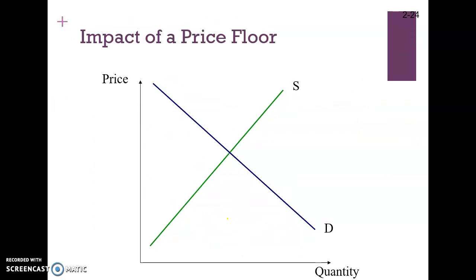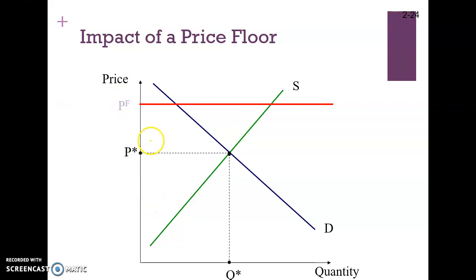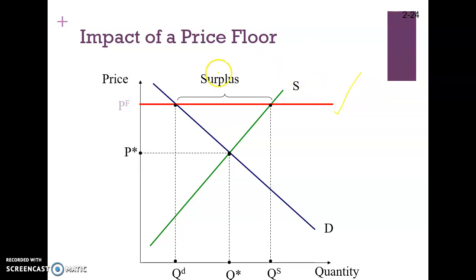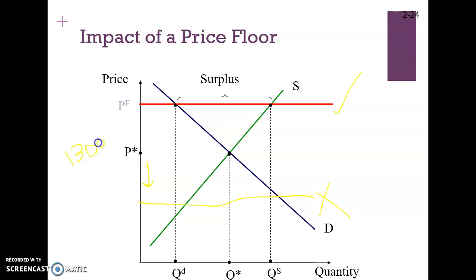The same logic applies to the price floor: since the floor is the legal minimum price, it will be effective when it is levied above the equilibrium price, and it always results in a surplus. If the floor is levied below the equilibrium price, it will not be effective. For example, price floors can be imposed as minimum wage laws — the government announces a minimum wage for unskilled employees of about thirteen thousand rupees.